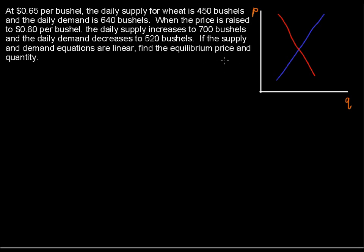At 65 cents per bushel, the daily supply for wheat is 450 bushels and the daily demand is 640 bushels. When the price is raised to 80 cents per bushel, the daily supply increases to 700 bushels and the daily demand decreases to 520 bushels. If the supply and demand equations are linear, find the equilibrium price and quantity.